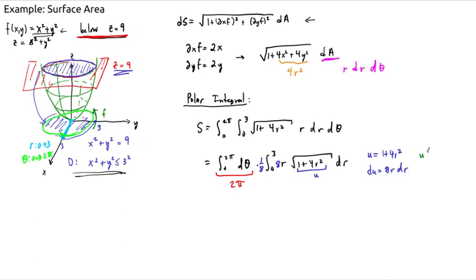And then the other thing we need to check is what happens to our bounds. So when R is equal to 3, U is equal to 3 squared, so 9 times 4, which is 36 plus 1. So that's 37. That's the upper bound now. And when R is equal to 0, U is just equal to 1.